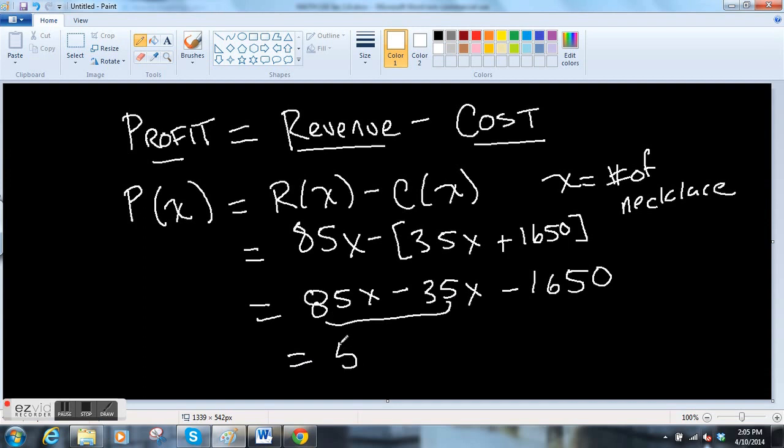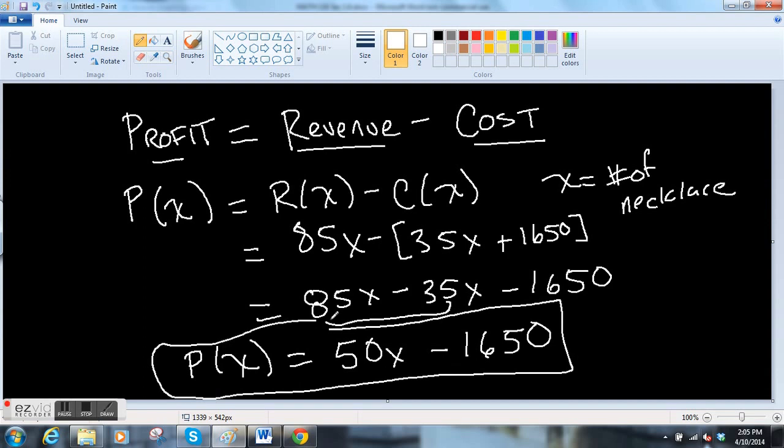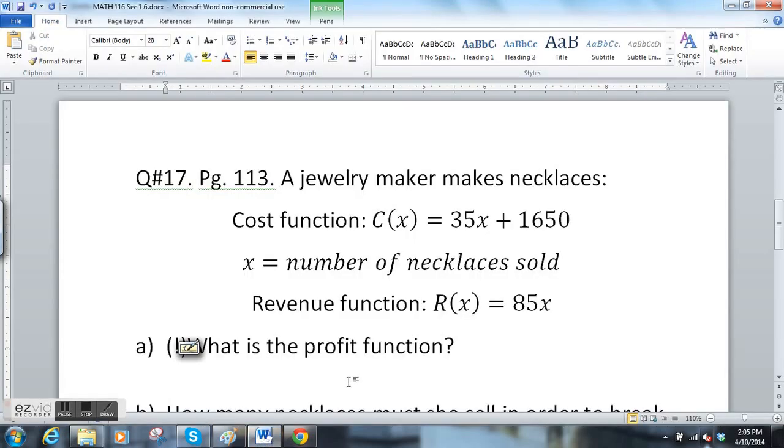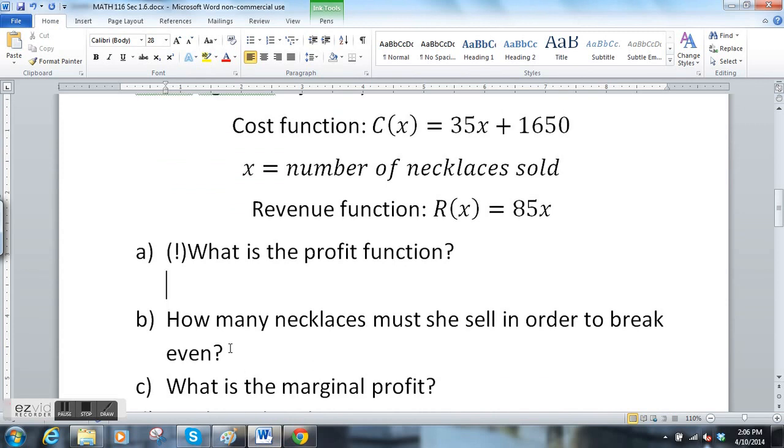Your profit function when you pull this through is 85x - 35x - 1650, which reduces to 50x - 1650. So the profit for the number of necklaces sold is 50x - 1650, and that's in dollars. The actual book gave you this question: how many necklaces must she sell in order to break even?